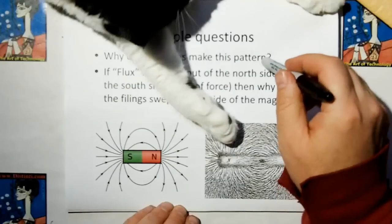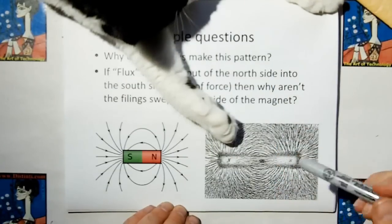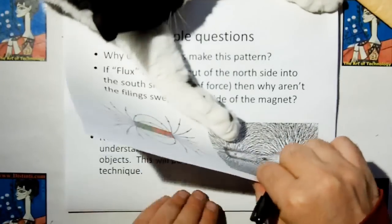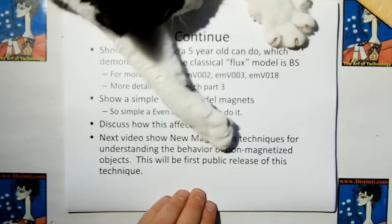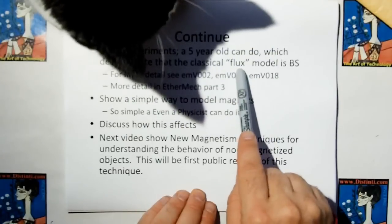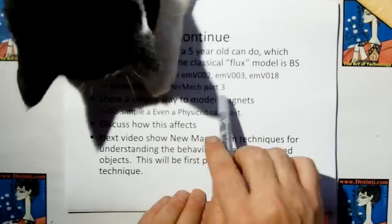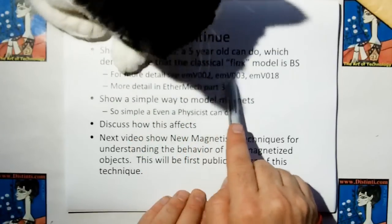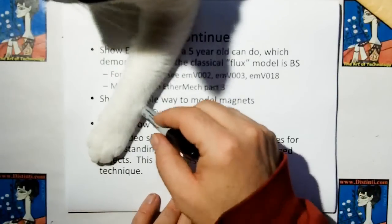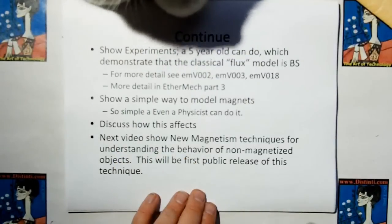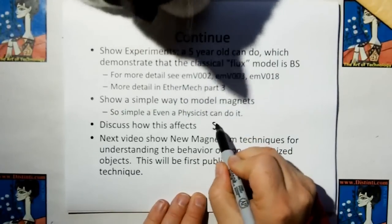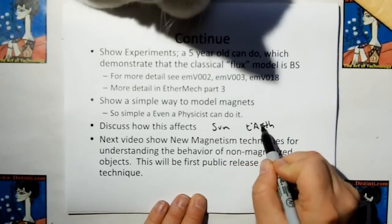The question is, why does the iron filings make this pattern? If flux is the energy going from the north side of the magnet to the south side, why aren't the iron filings swept to the south side? So as we continue, I'm going to show with simple experiments that a five-year-old can do, which will demonstrate that the classical flux model, which means flow actually, is baloney. There's actually more detail of this in the Ethereum Mechanics video number 2, 3, and 18. We're going to have a lot more detail in part 3.